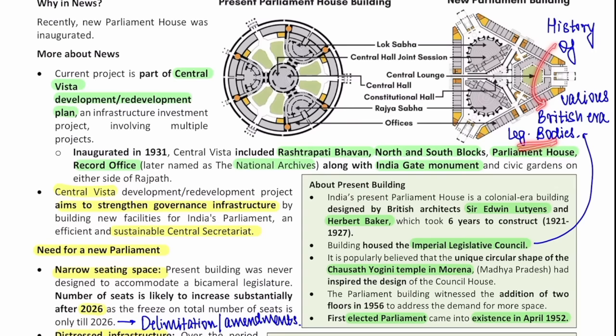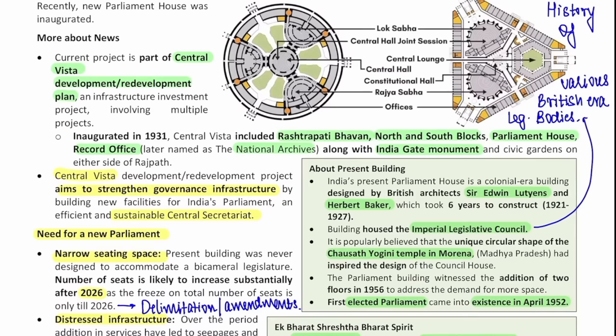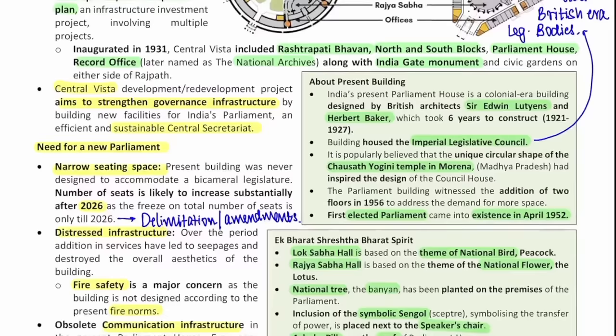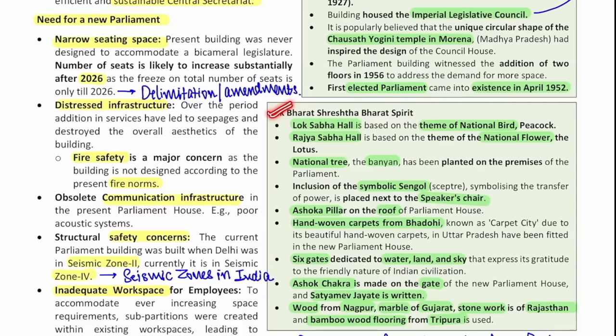The current house, which is circular in shape, is inspired from the Chausath Yogini temple in Morena, Madhya Pradesh — a question was already asked on this in prelims 2021 or 22. You also need to revise the first elected parliament which came into existence in April 1952. I would recommend you go back to Lakshmikanth and revise the parliament chapter. For prelims: it is built in the Ek Bharat Shrestha Bharat spirit. The Lok Sabha hall is based on the national bird — peacock; Rajya Sabha hall — national flower lotus; national tree banyan has been planted on the premises.